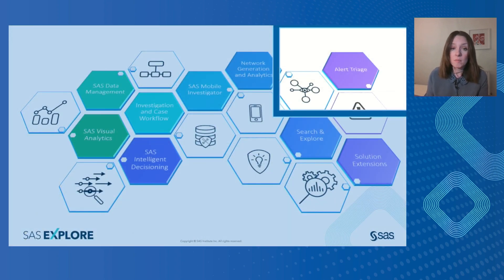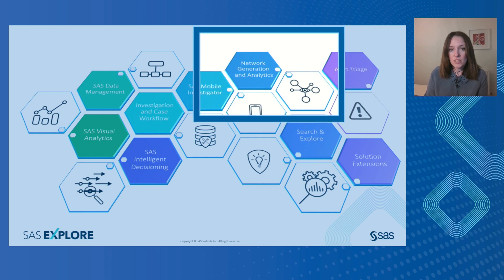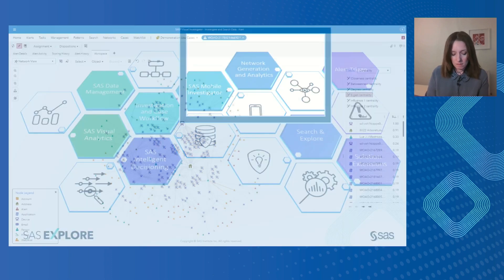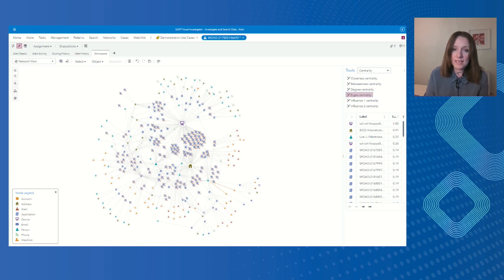Historically, analysts would need to query multiple isolated systems to find information that might be relevant. They'd have to manually examine pieces of seemingly unrelated data to try and find patterns in previously concealed relationships. But Visual Investigator works in cohesion with SAS's entity resolution and network generation tools to automatically resolve entities based on common properties and create the links between entities to build networks and show the communities. The entity resolution and network generation tools identify these common real-world entities — people, locations, telephone numbers, email addresses, and so on — and these are made available to VI so that users can search the data and explore the associations in network views like this.